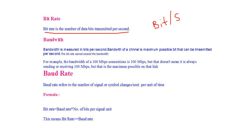The maximum number of bits that can be transmitted per second in a channel is the bandwidth, and the bit rate cannot exceed the bandwidth. For example, the bandwidth of a 100 Mbps connection is 100 Mbps, but that does not mean it is always sending or receiving 100 Mbps — that is simply the maximum possible on that link.